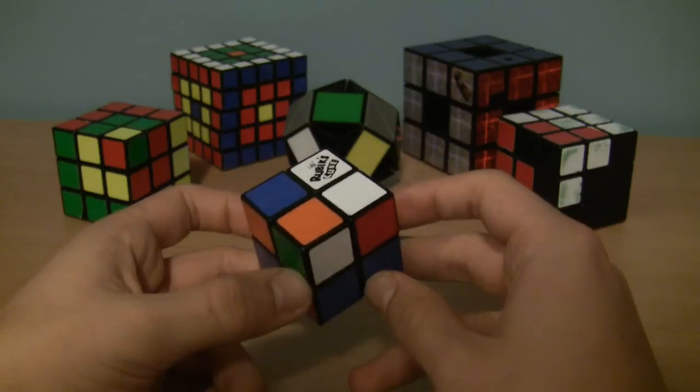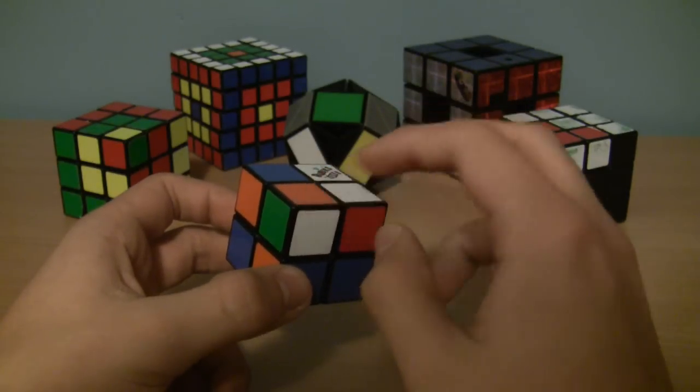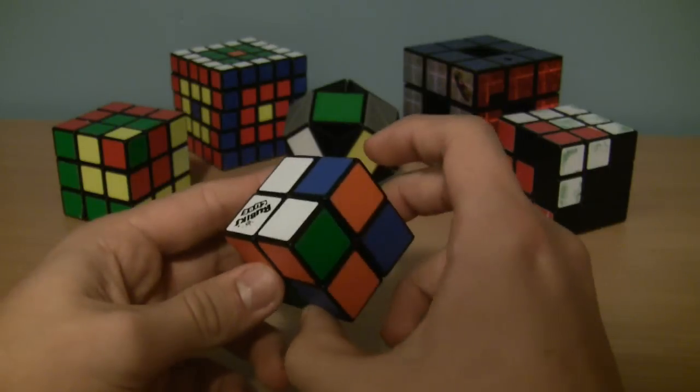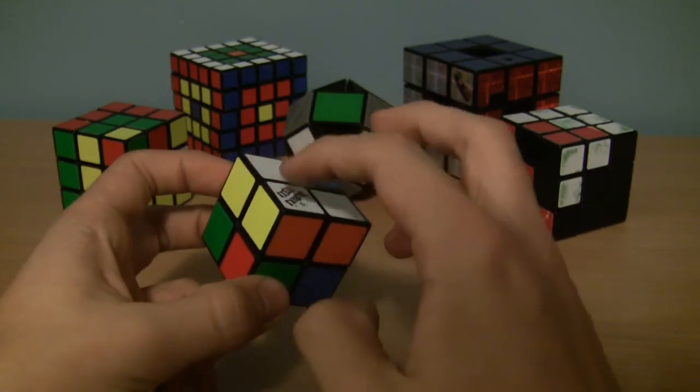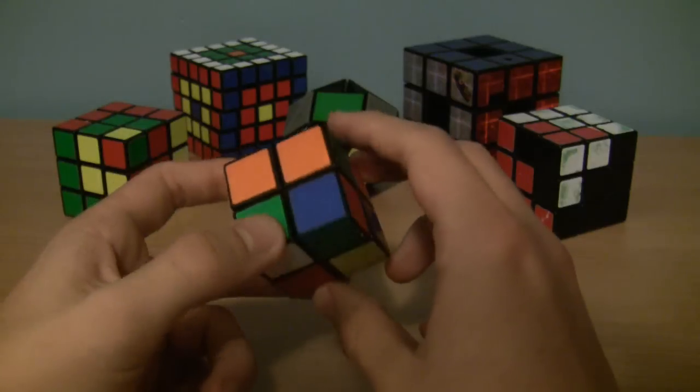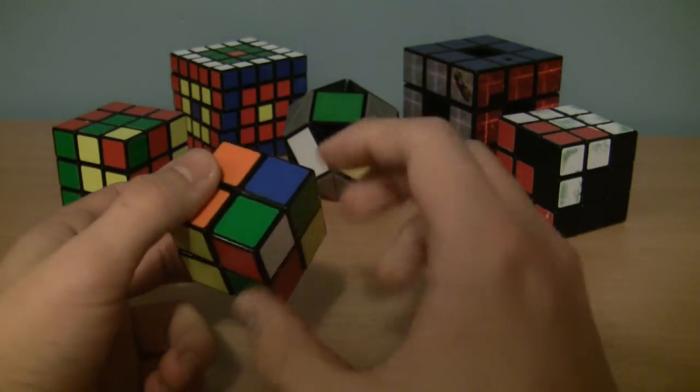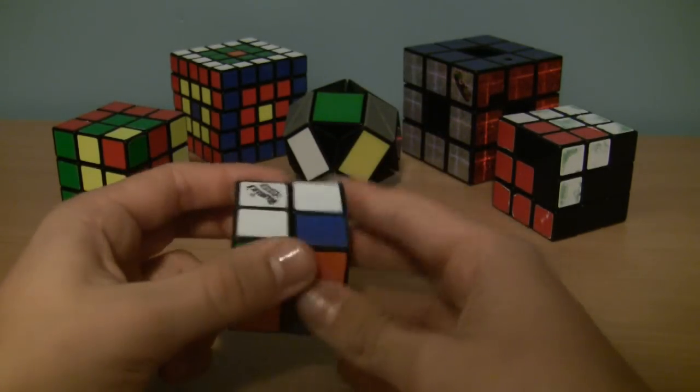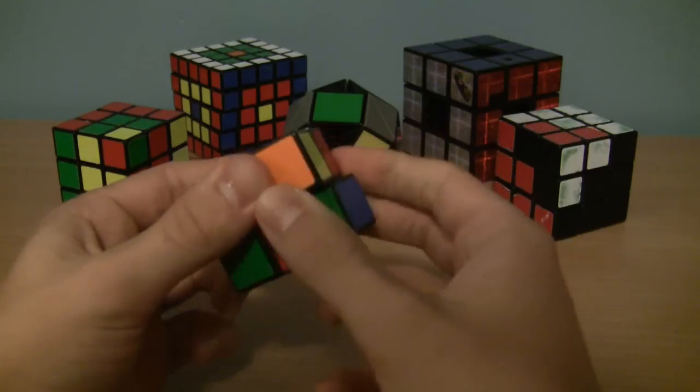So now we have two more pieces to go for the first layer. This one is easily solvable. All you need to do is just move it like that. And now we have three pieces solved. So now the final one. Look around for it. Here it is. And just like with any other piece, you want to put it underneath where it needs to go, right here.